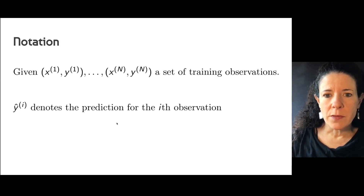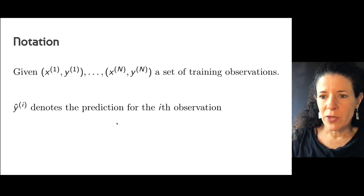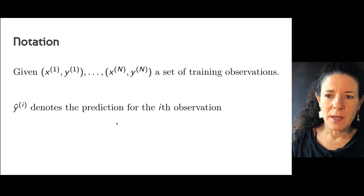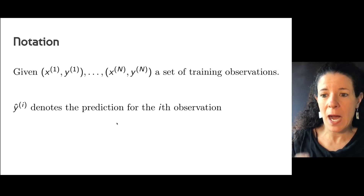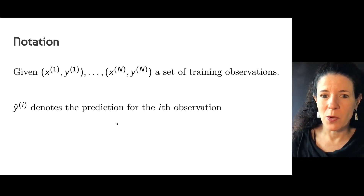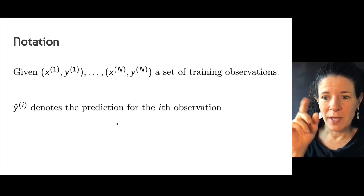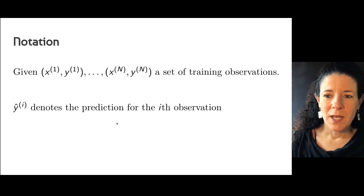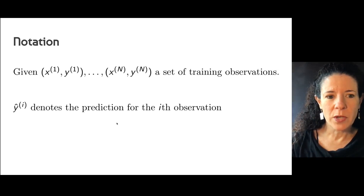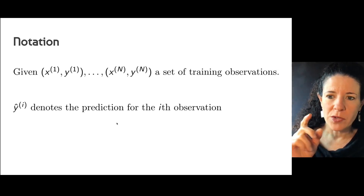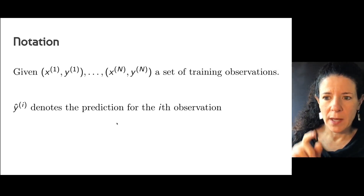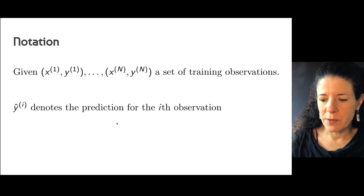Here is the notation I use. The observation index is written as a superscript i — so X^i and Y^i — and predictions are written as Y-hat, with Y-hat^i referring to the prediction for observation i.